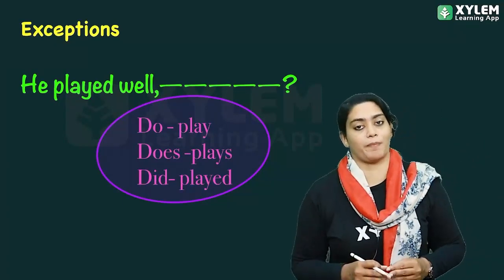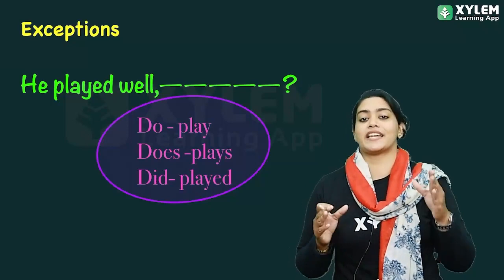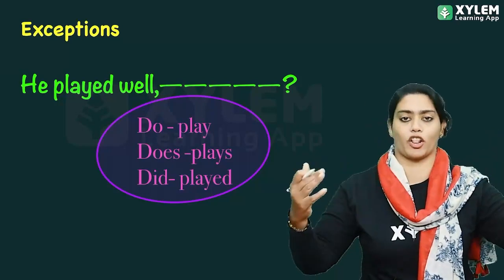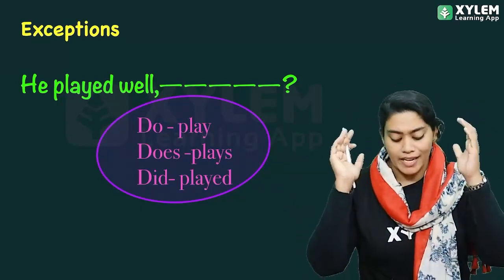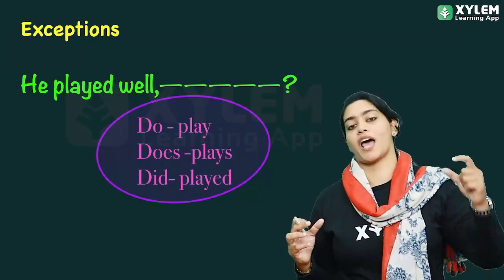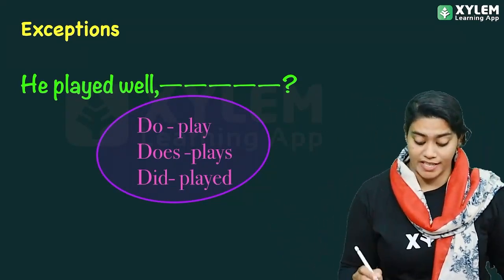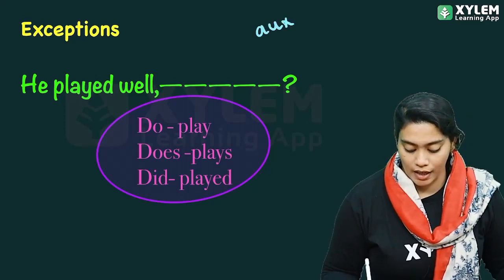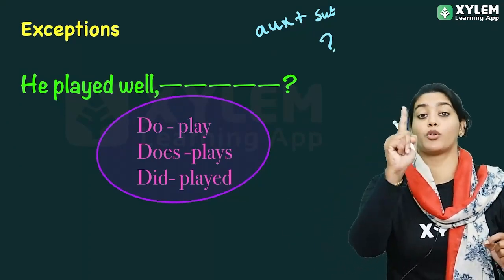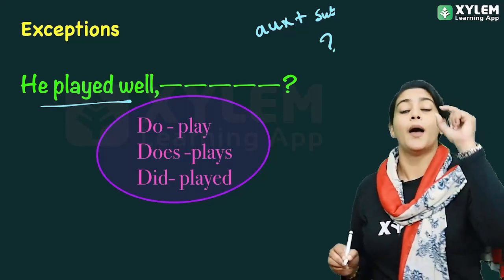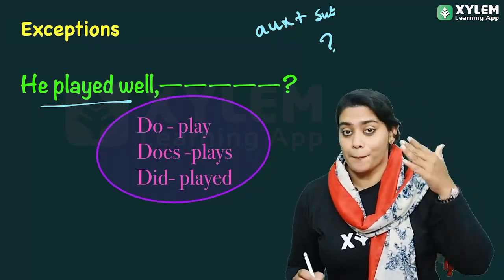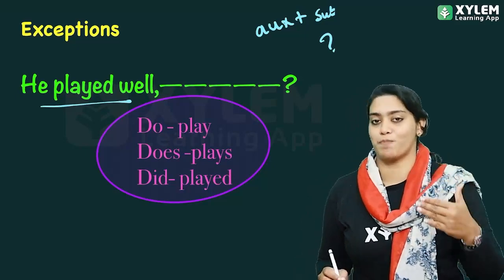This is an exceptional case. 'He played well' — in this sentence there is no auxiliary verb, so we need to create a tag using do, does, or did. 'Played' is the verb, and we know 'played' is past tense.